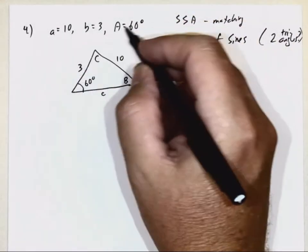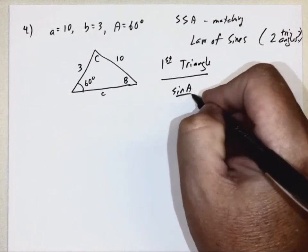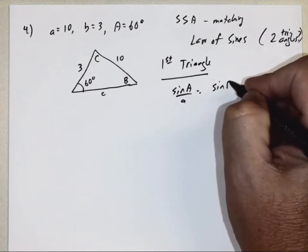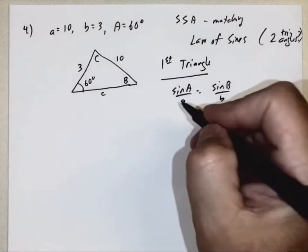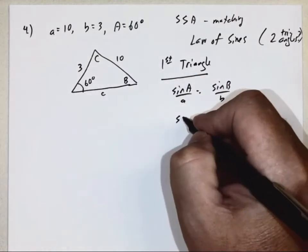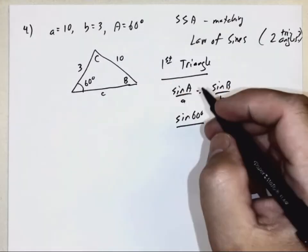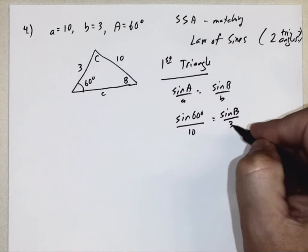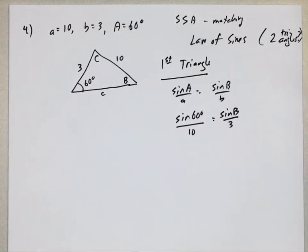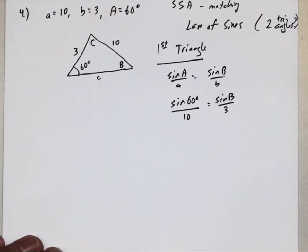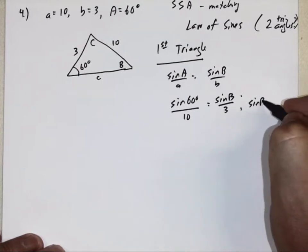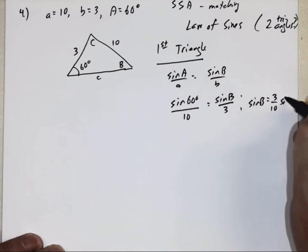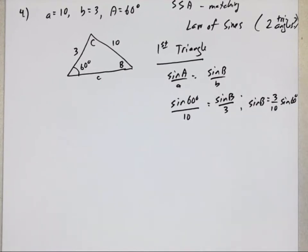Going to use the law of sines. We know we have A, so sine A over little a, and we have side B, so we're going to use the A's and the B's. I can fill in what I know since A is 60 degrees, and side A is 10. I don't know angle B, but I do know side B is 3. So in this case, I can solve for sine B, which means eventually I can get angle B. So if I do a little algebra, sine B is going to be 3 tenths times the sine of 60 degrees. So 60 degrees sine times 3 divided by 10.